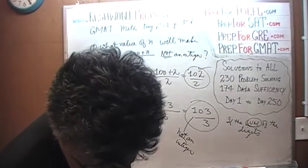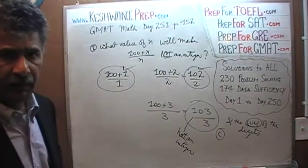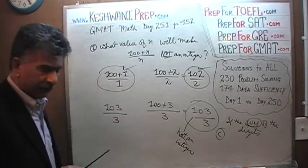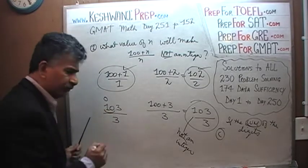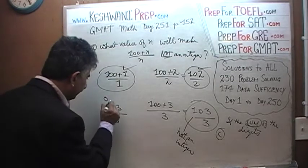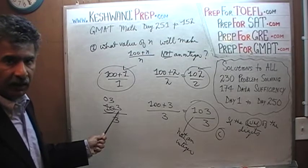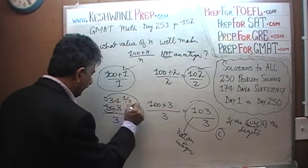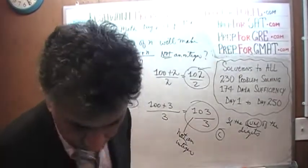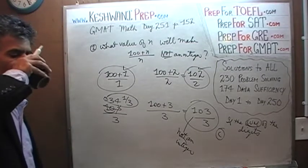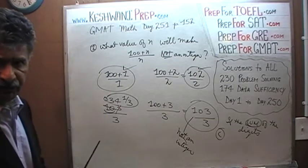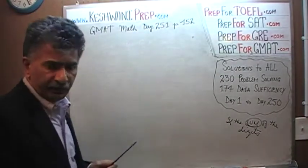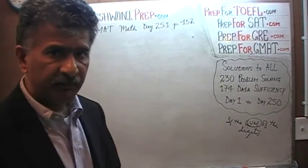103 divided by 3: how many 3s in 1? None — carry to make 10. How many 3s in 10? Three, remainder 1. That 1 joins the 3 to make 13. How many 3s in 13? Four, with remainder 1. So we get 34 and one-third — not an integer. The answer choice is C. This division was not necessary for the exam; we did it for learning purposes. We'll do a lot of extra work in these videos that isn't required on the exam — it's for learning.